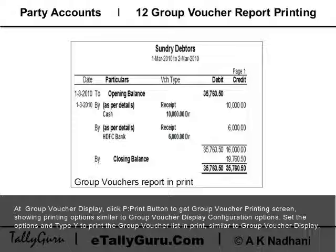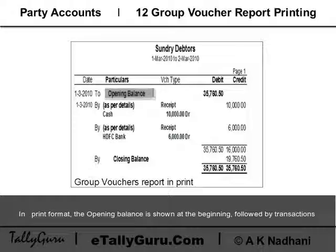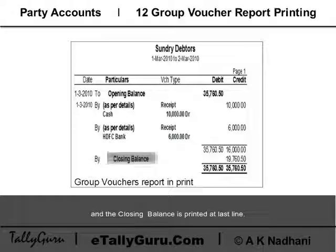The print output is similar to the group voucher display. In the print format, the opening balance is shown at the beginning, followed by transactions, and the closing balance is printed at the end.